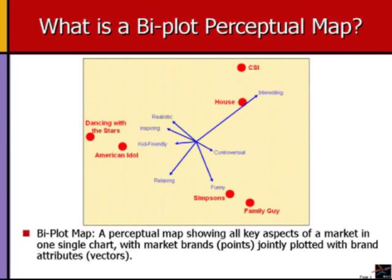On the map, brands are shown as points and attributes as arrows or vectors. Note that biplot maps are sometimes used to portray information about entities other than brands, and so sometimes points are used to represent segments, product categories, industries, or other entities. In this example, the brands are TV shows.